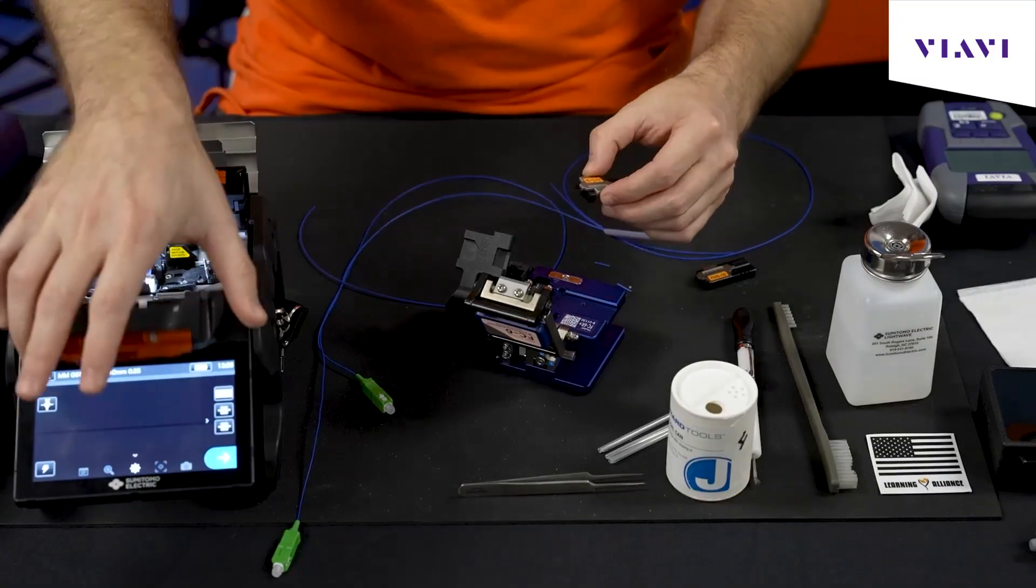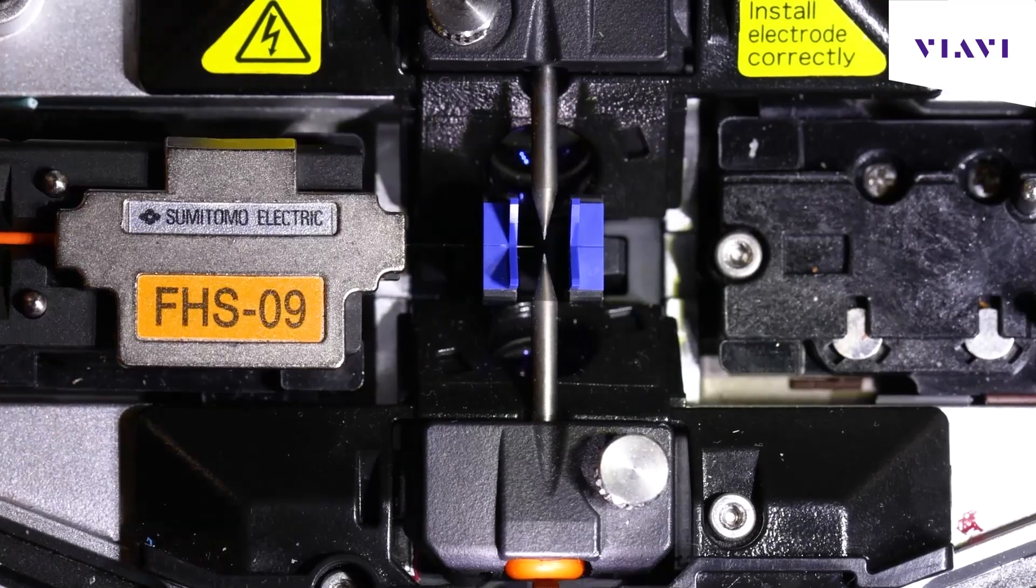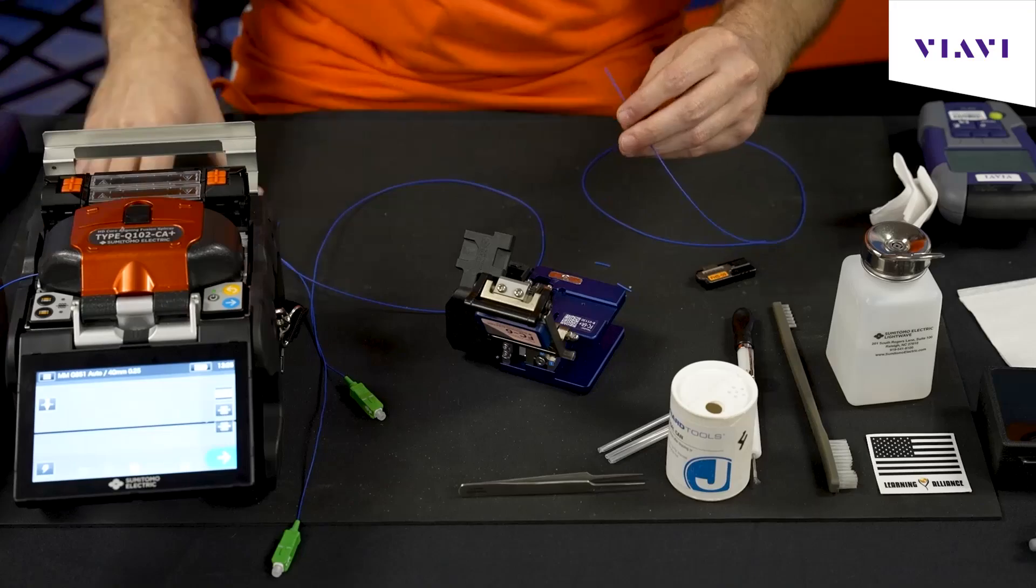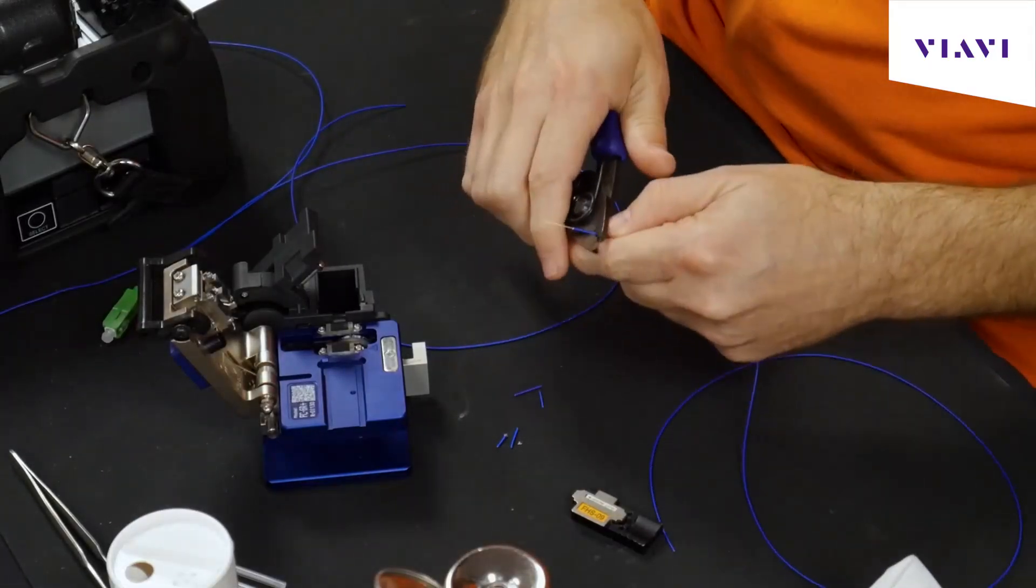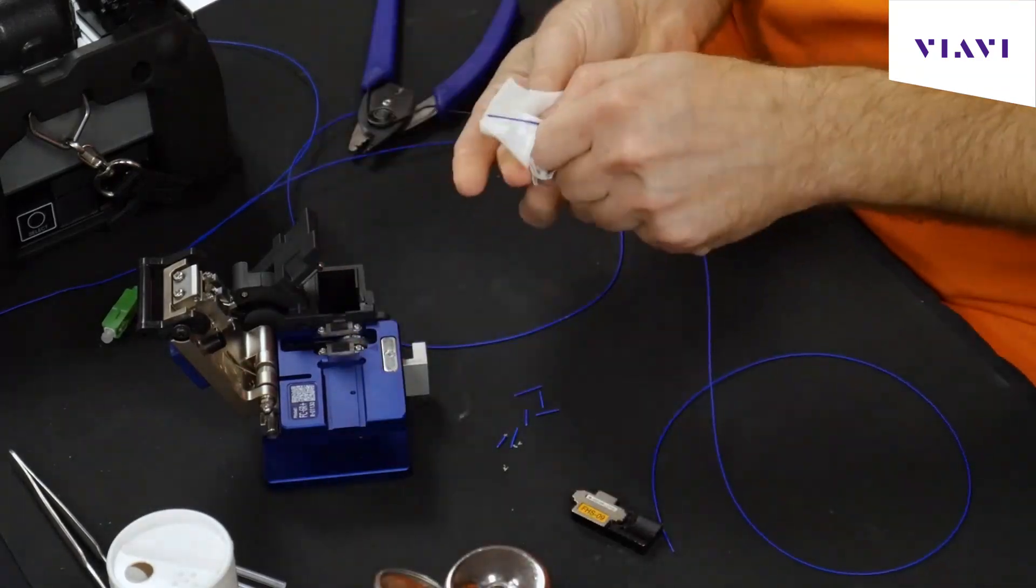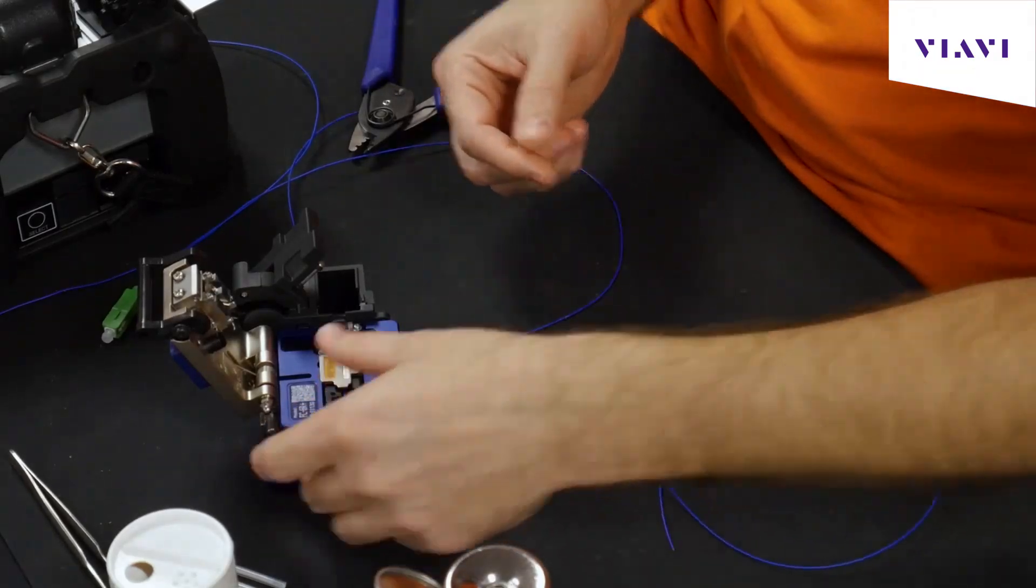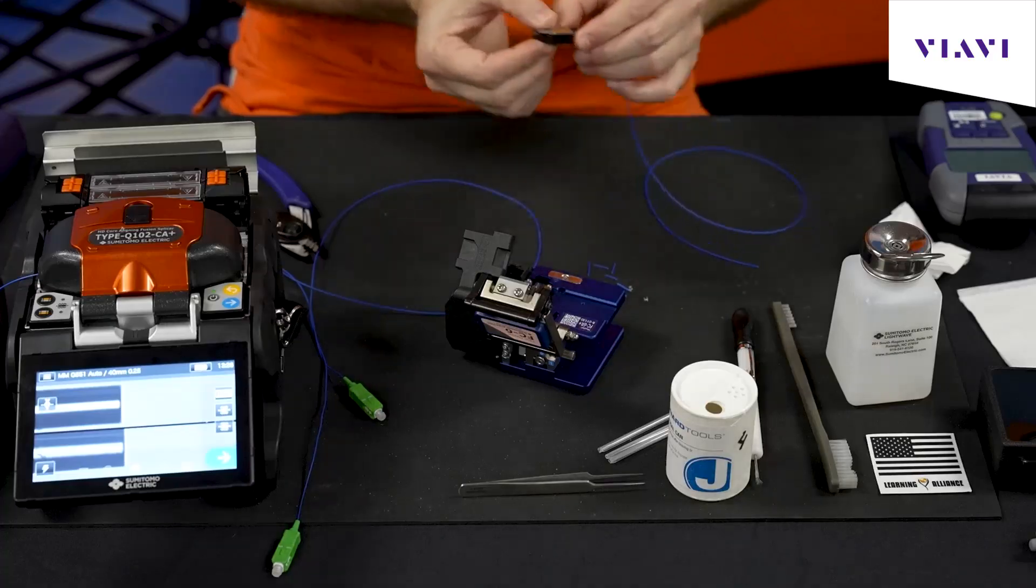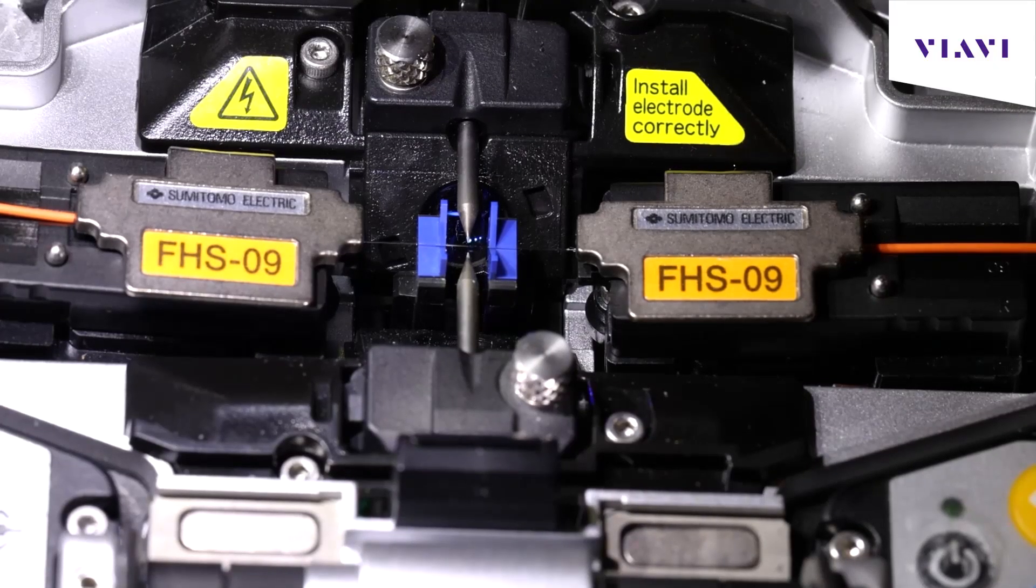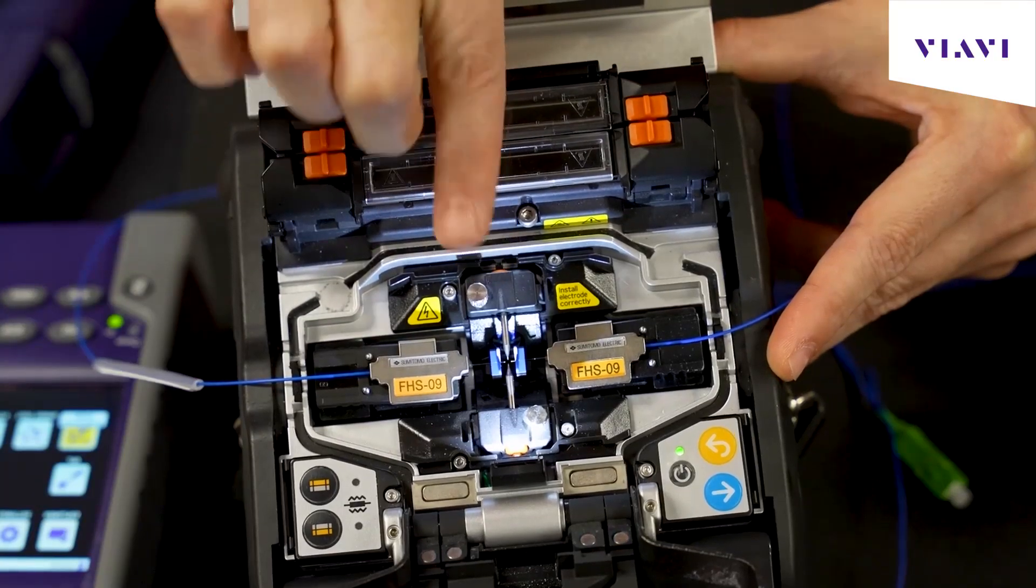Once the cut is performed, I'm going to go ahead and load it straight into the splicer itself. And now I'm going to prep the other side. Notice the distance of the fiber to the electrodes. You do not want the fiber to cross the electrodes, and also you don't want them to be too short that the two cameras underneath can't see the fiber.